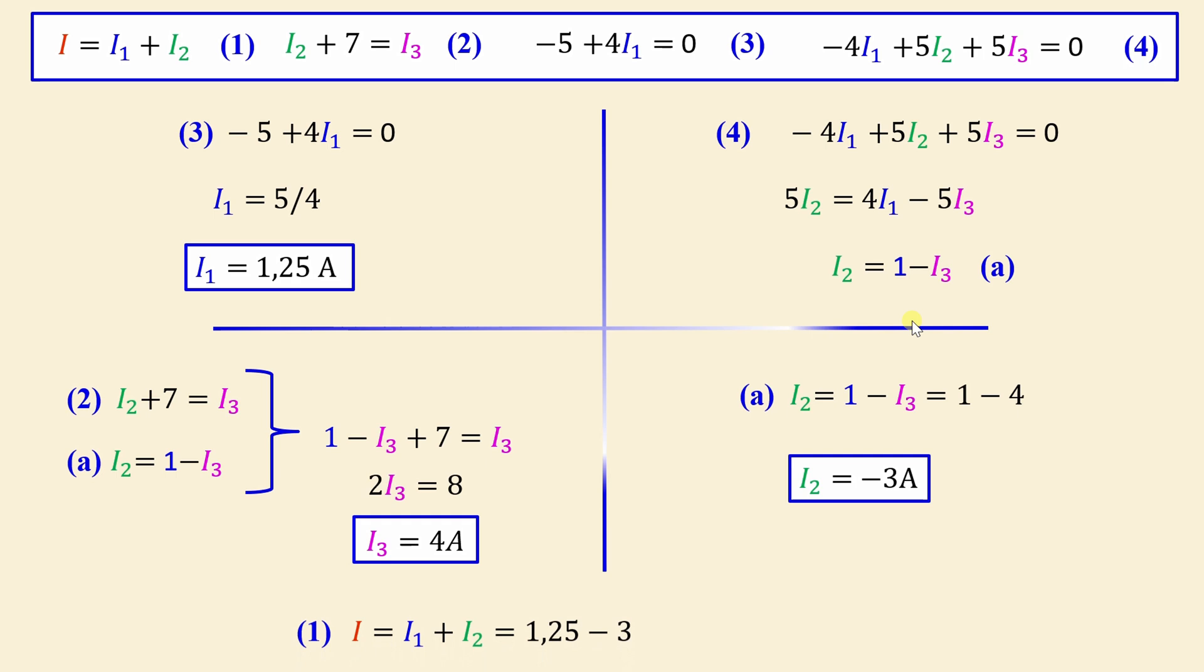We go now to equation number 1. We have I is equal to I1 plus I2 is equal to 1.25 minus 3. We obtain I is negative 1.75 amps.